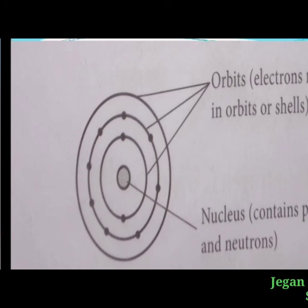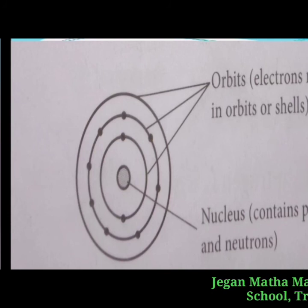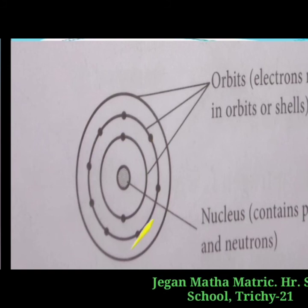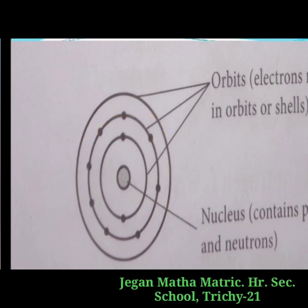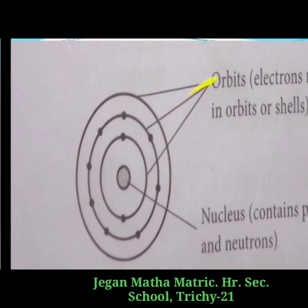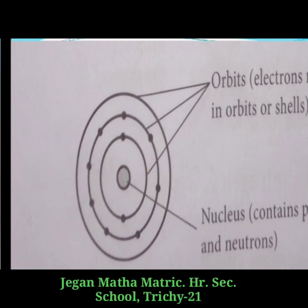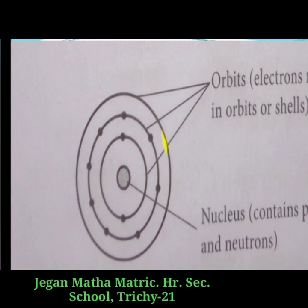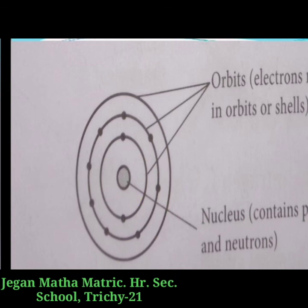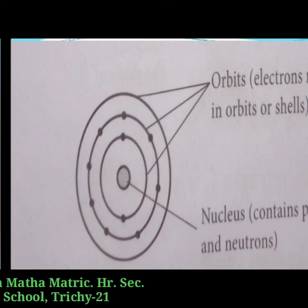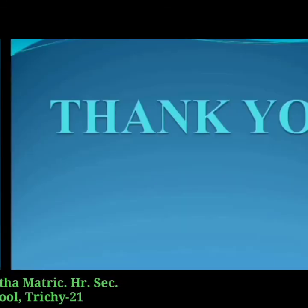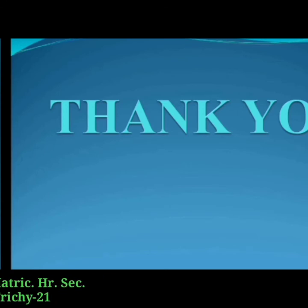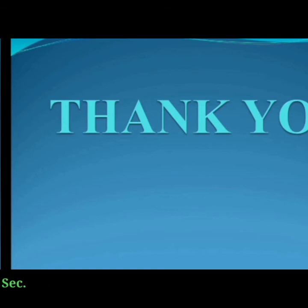Inside the nucleus of an atom, protons and neutrons are found, so they are known as nucleons. An orbit is defined as the path by which electrons revolve around the nucleus. The nearest orbit to the nucleus is the first orbit, that is the K shell, followed by L shell and M shell. The nucleus is present at the center of an atom. Students, I hope you all understood Bohr's model of an atom, its limitations, the discovery of neutrons, and the properties of subatomic particles. Thank you.